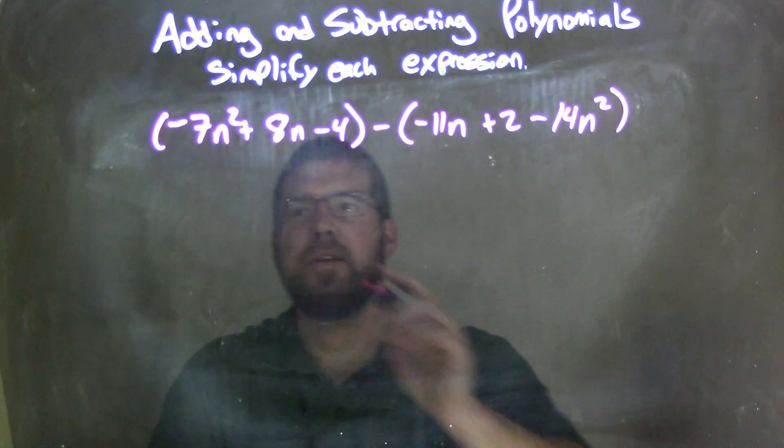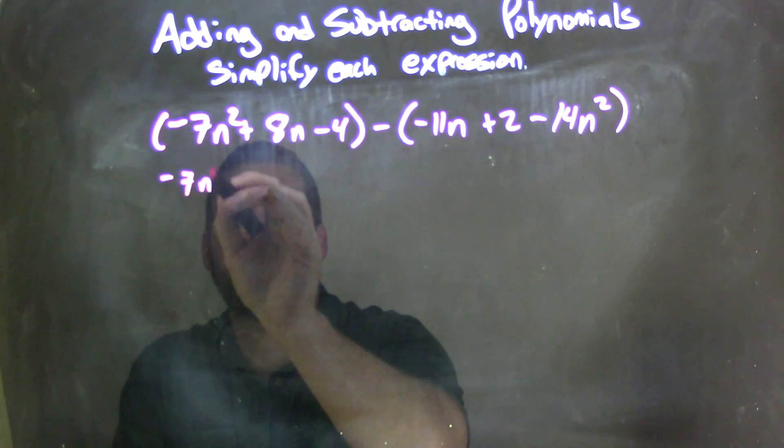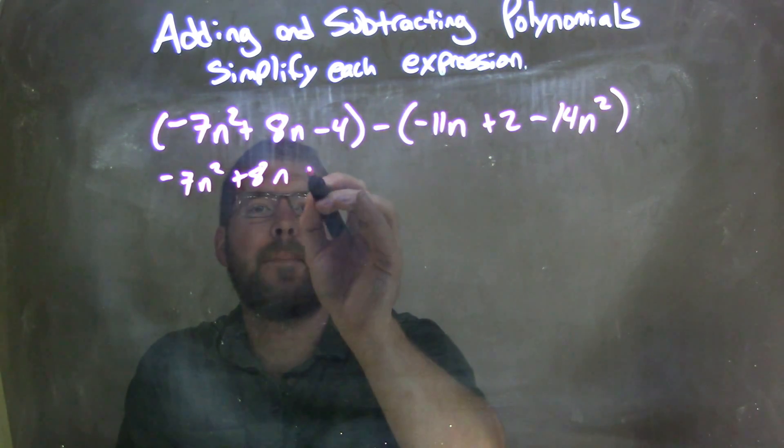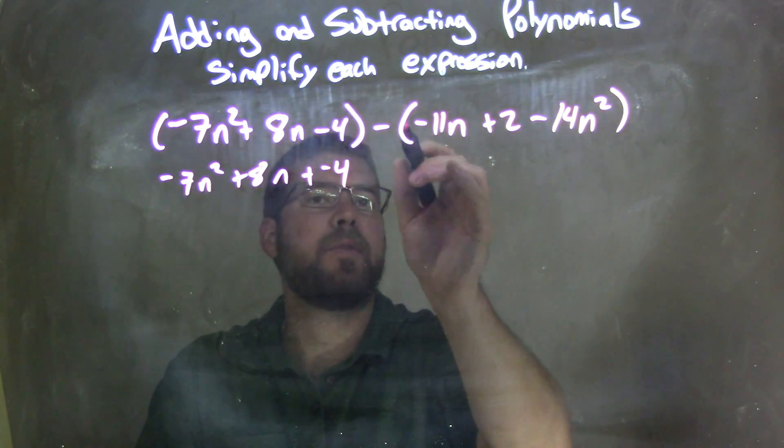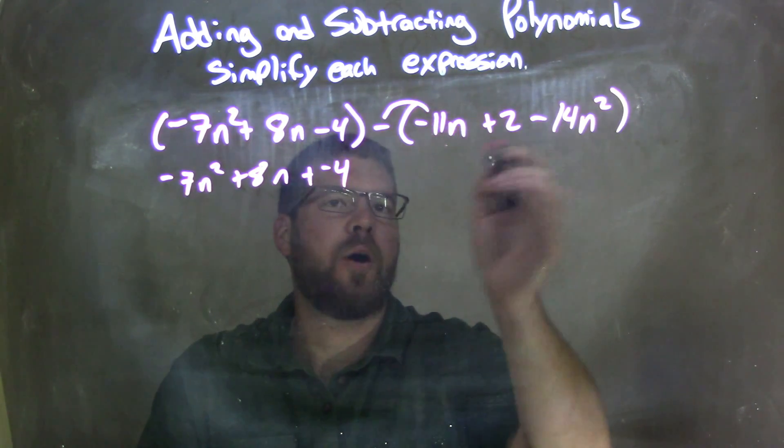So every subtraction sign, I'm going to make it plus a negative. So we have negative 7n squared plus 8n plus a negative 4. Then I'm going to distribute this minus sign across to all parts here.